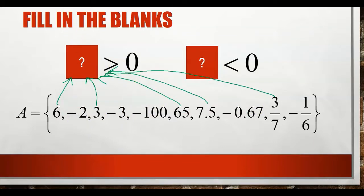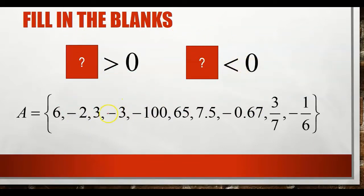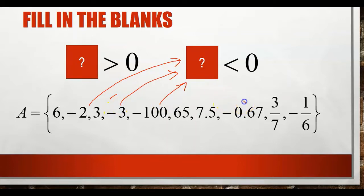For the second relation, we need a number less than 0. Negative 2, negative 3, negative 100, negative 0.67, and negative 1/6 are all negative numbers. So these 5 numbers should be filled into the second box so that it will be less than 0.